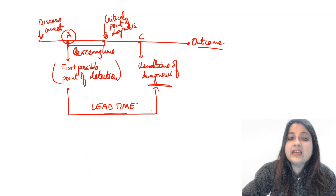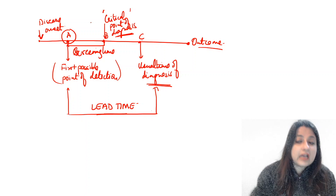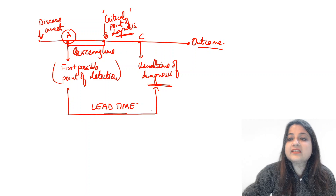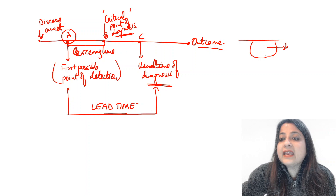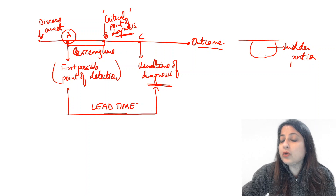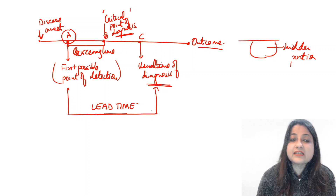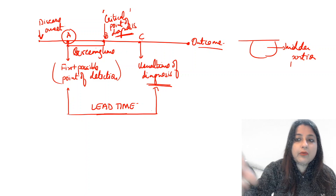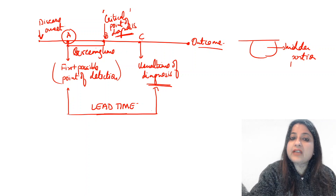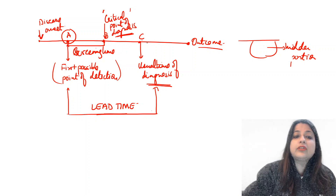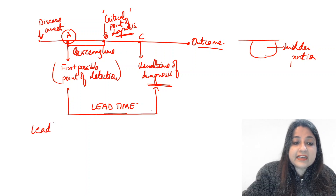To get an advantage out of a screening test, you must apply the test at least at point B — the critical point of diagnosis. After point B, applying a test may not yield substantial advantage. Screening is applied on apparently healthy populations to find out the hidden portion of the iceberg — those who appear healthy but might not actually be, so we can provide them timely treatment to prolong survival or completely cure the disease.